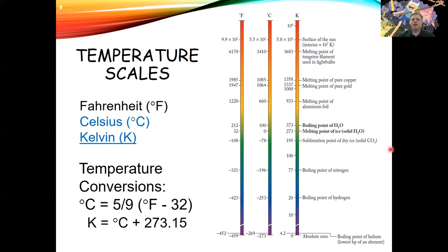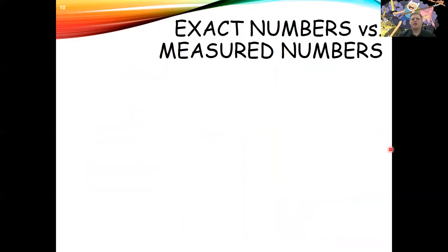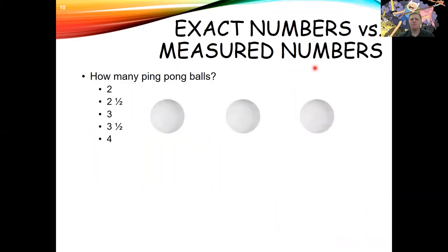Next, let's talk about whether a measured value is an exact number or comes from some measuring mechanism. How many ping pong balls do you see? One, two, three — that's an exact value. There's not 3.17; there's exactly three. We know it's exact because we counted it. Exact numbers are always counted. Measured numbers, as the name implies, come from measurement.